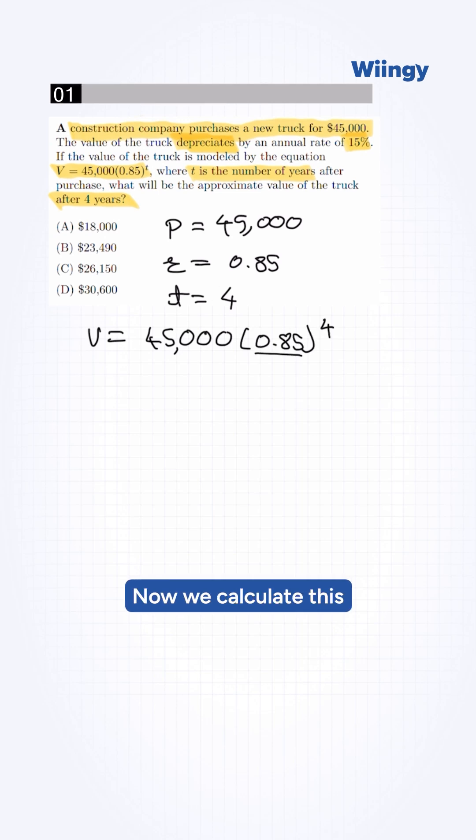Now we calculate this. It will be 0.522 into 45,000. This will be 23,490.